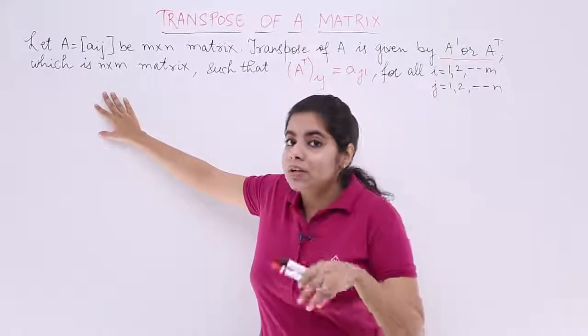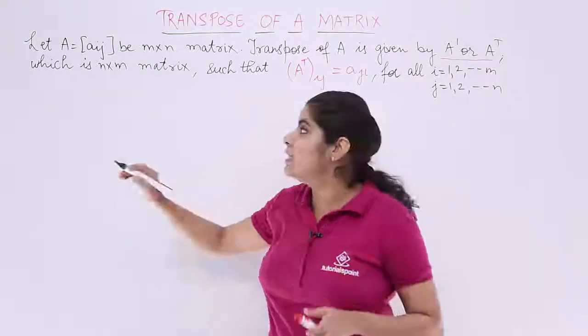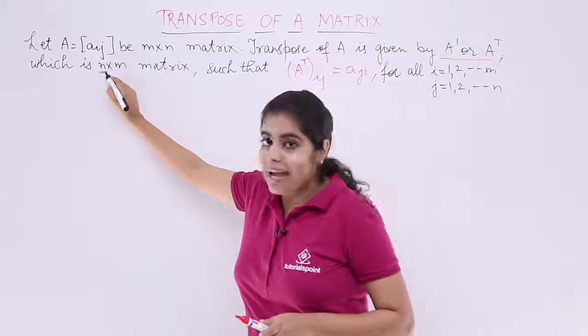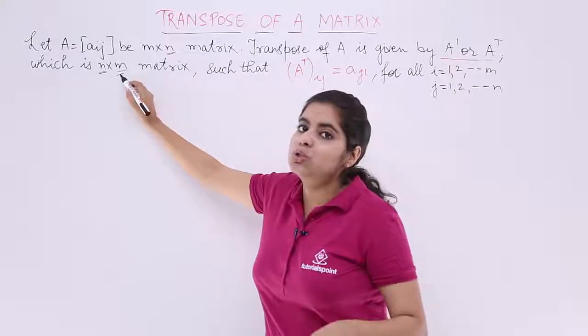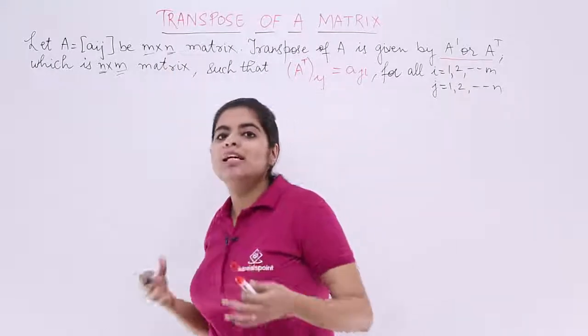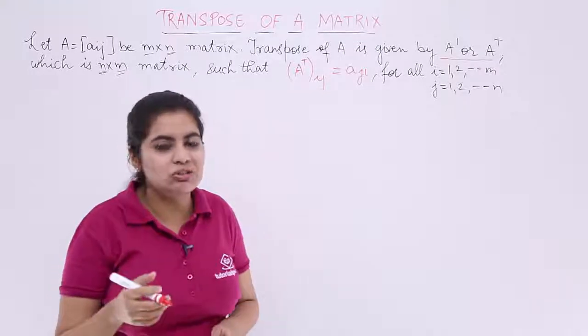So the transposed matrix would be an n by m matrix. That means now the rows are n which were earlier the columns. Now the columns are m which were earlier the rows. So you are basically interchanging the rows and the columns. Let's see a numerical illustration to this.